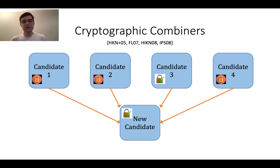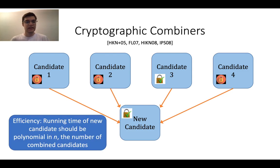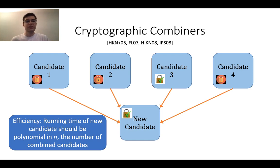Additionally, we want the property that the cryptographic combiner is efficient, meaning that as the number of candidates that we combine increases, the running time of the new candidate remains polynomial in the number of combined candidates.